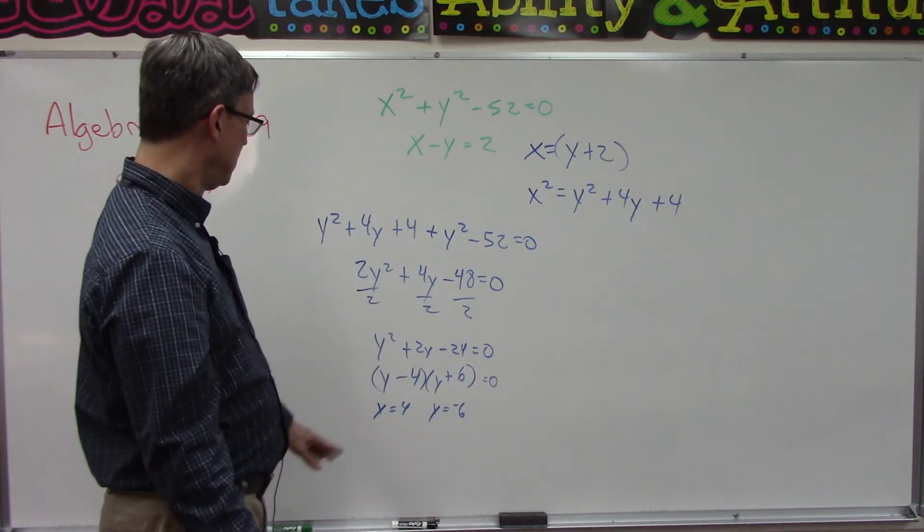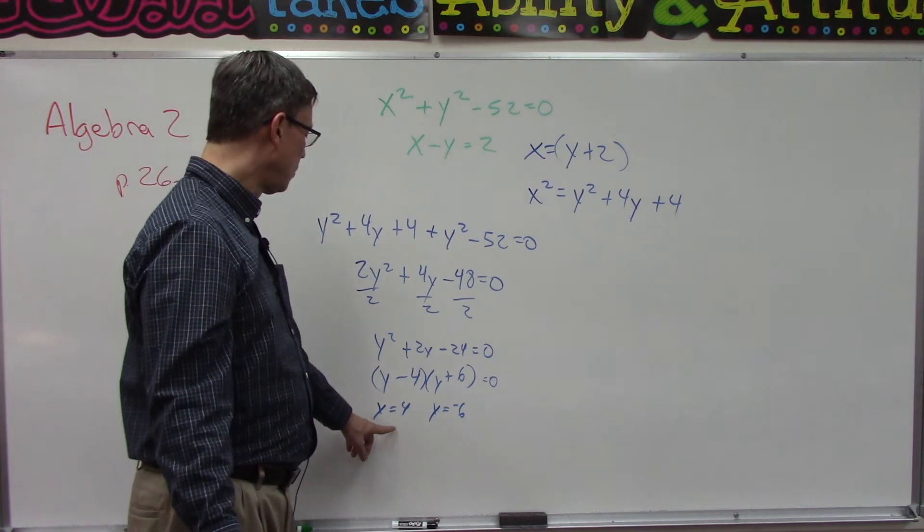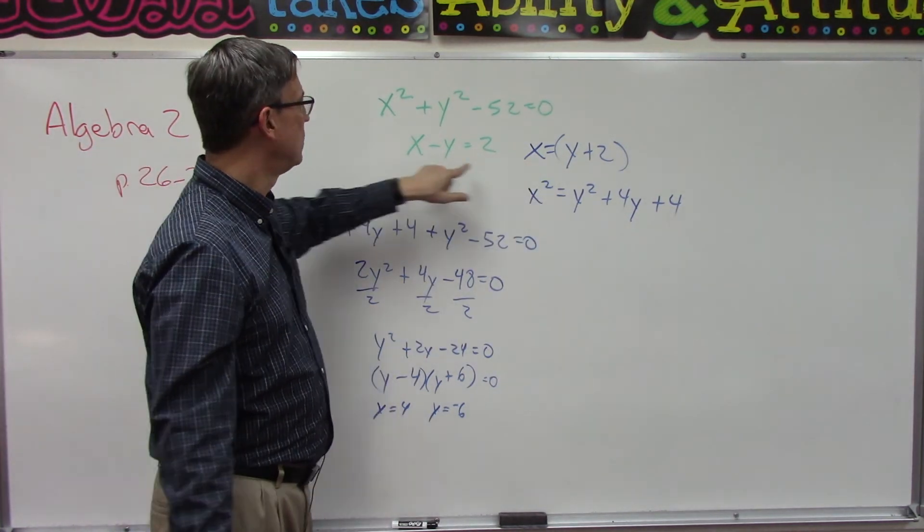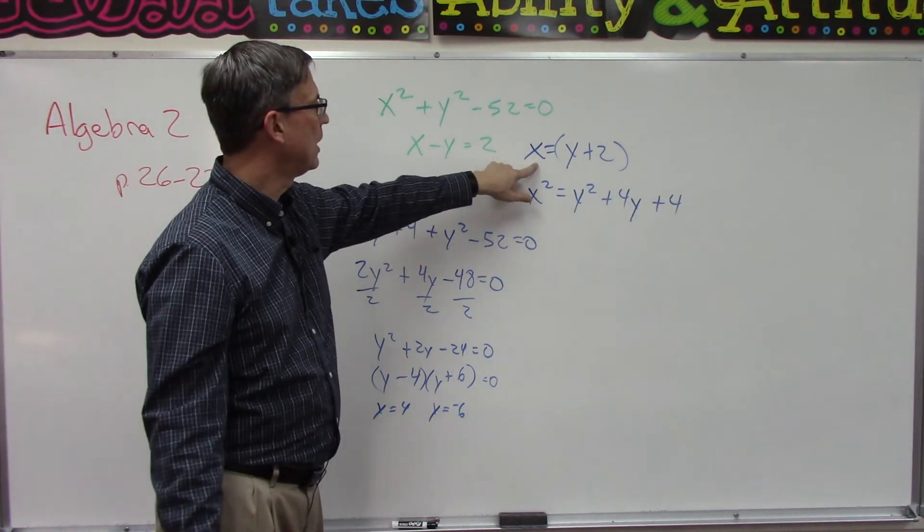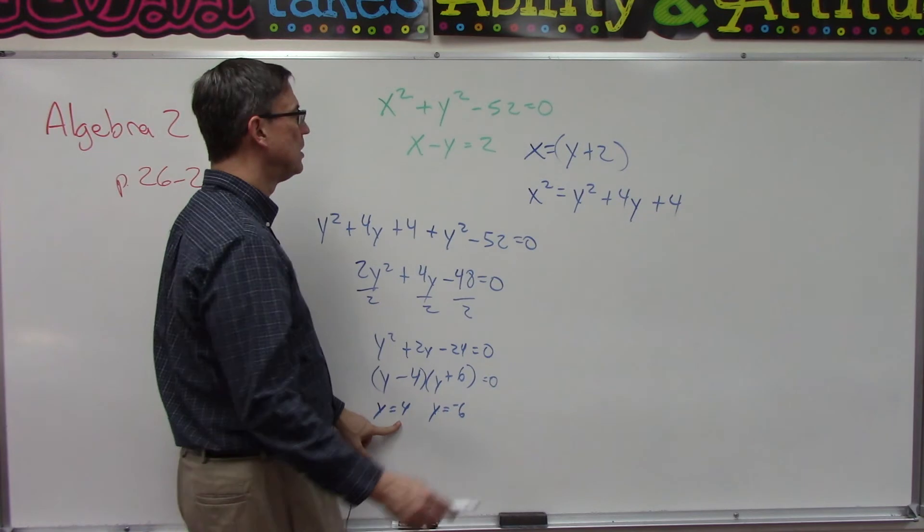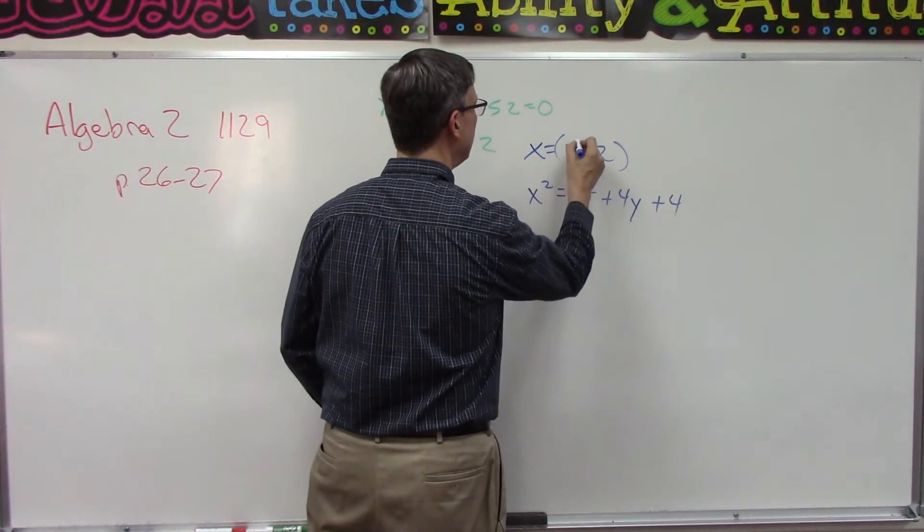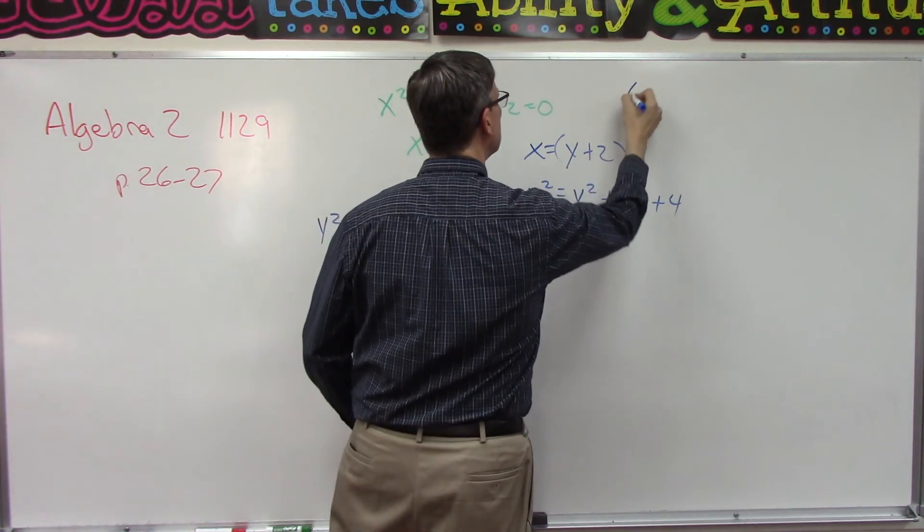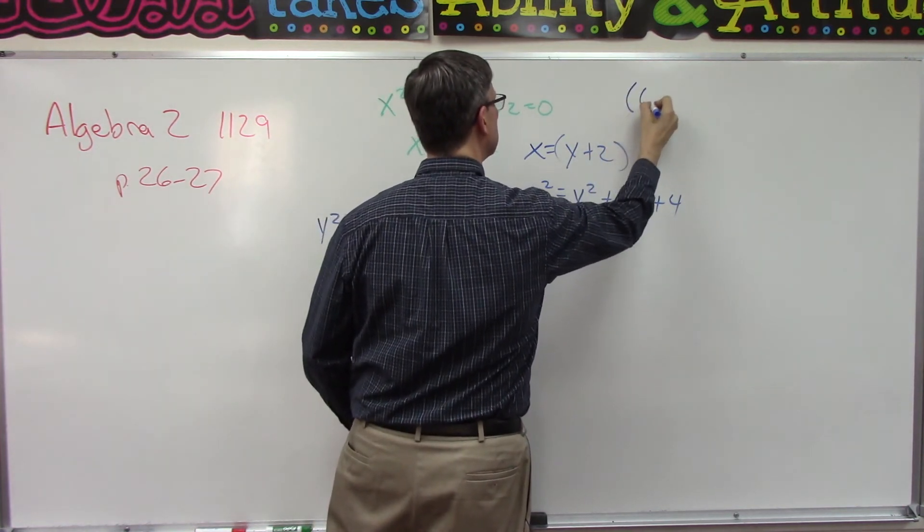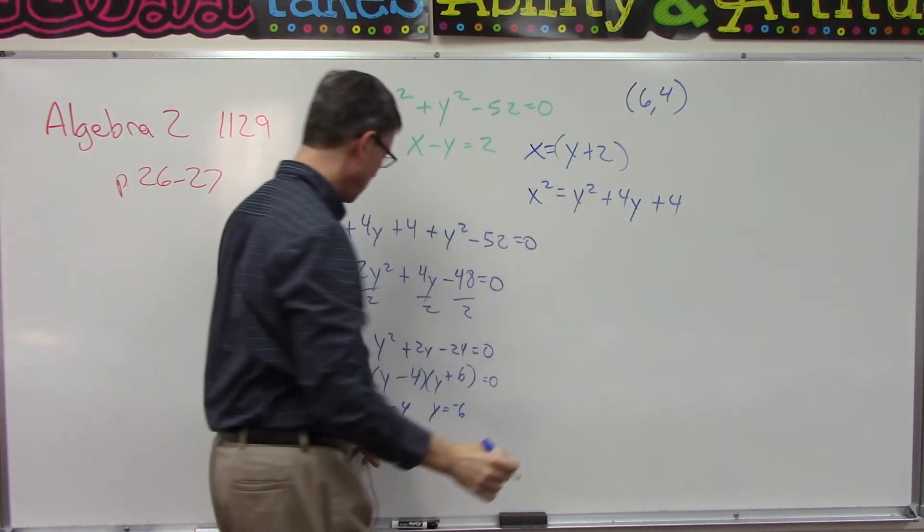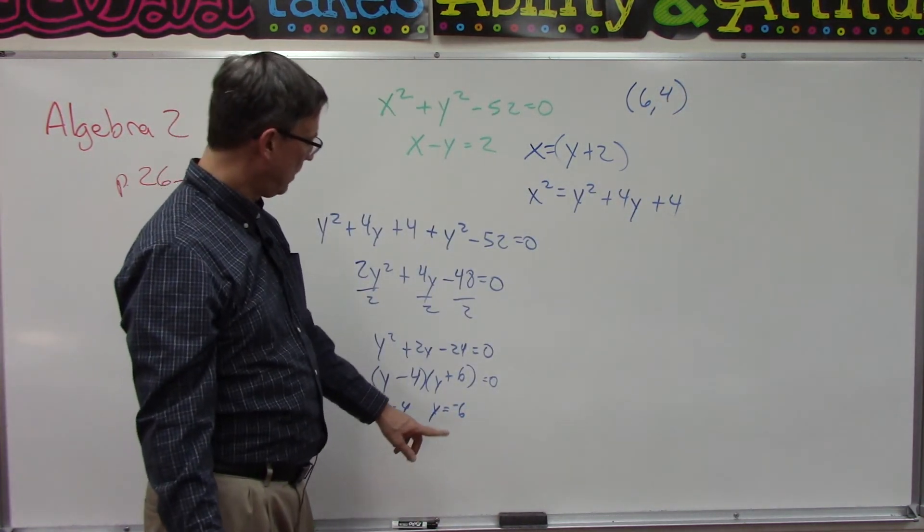Now we can find the corresponding x values by plugging into this equation here that we solved for x. So when y is four, plug in four here. What's four plus two? Six. So we have an ordered pair here: six comma four.